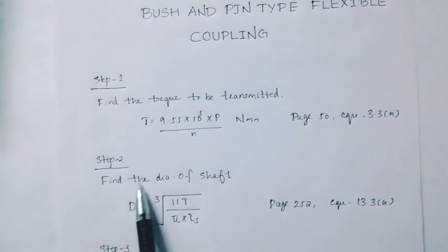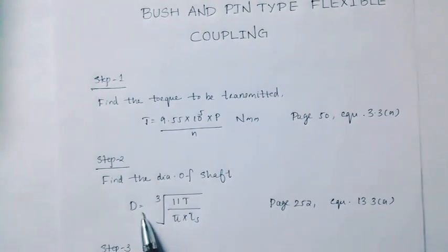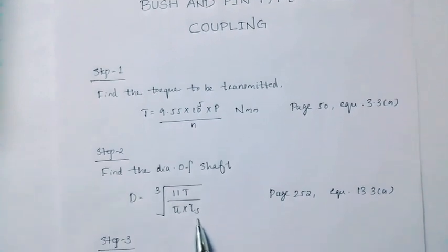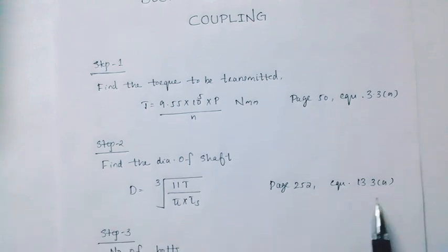Next step, diameter of the shaft D. Equation: cube root of 11T divided by pi into tau A. Page number 252, equation 13.3A.